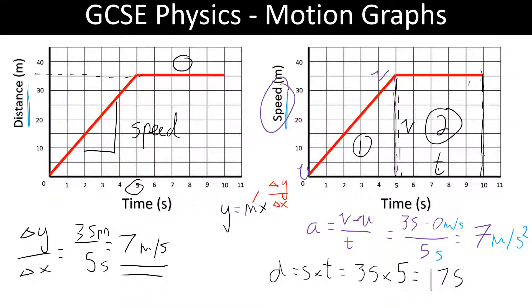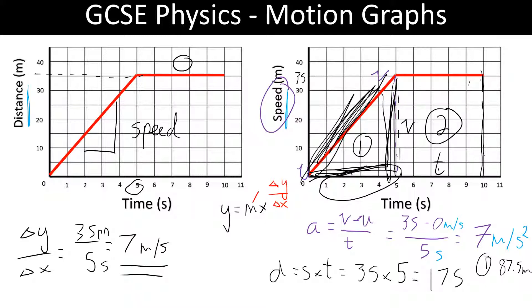This section here involves working out the area of a triangle, which is half base times height. So we have half times 5 times 35 — that's 2.5 times 35, giving area 1 as 87.5 metres. That's half the base of 5 seconds times the height of 35. So when we add 175 to 87.5, we get a total distance travelled in this entire graph of 262.5 metres.